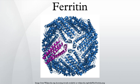Plasma ferritin is also an indirect marker of the total amount of iron stored in the body, hence serum ferritin is used as a diagnostic test for iron deficiency anemia. Ferritin is a globular protein complex consisting of 24 protein subunits and is the primary intracellular iron storage protein in both prokaryotes and eukaryotes, keeping iron in a soluble and non-toxic form.